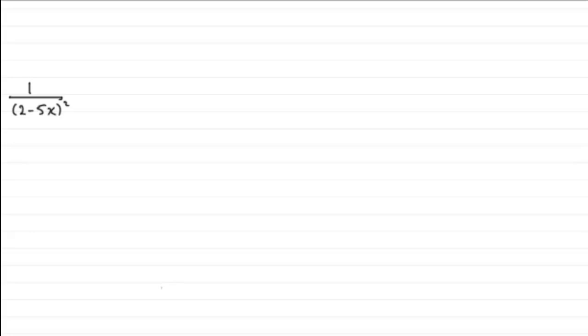Now for this question we're asked to expand 1 over 2 minus 5x all squared in ascending powers of x up to and including the term in x squared, giving each term as a simplified fraction. So how am I going to expand something like this?